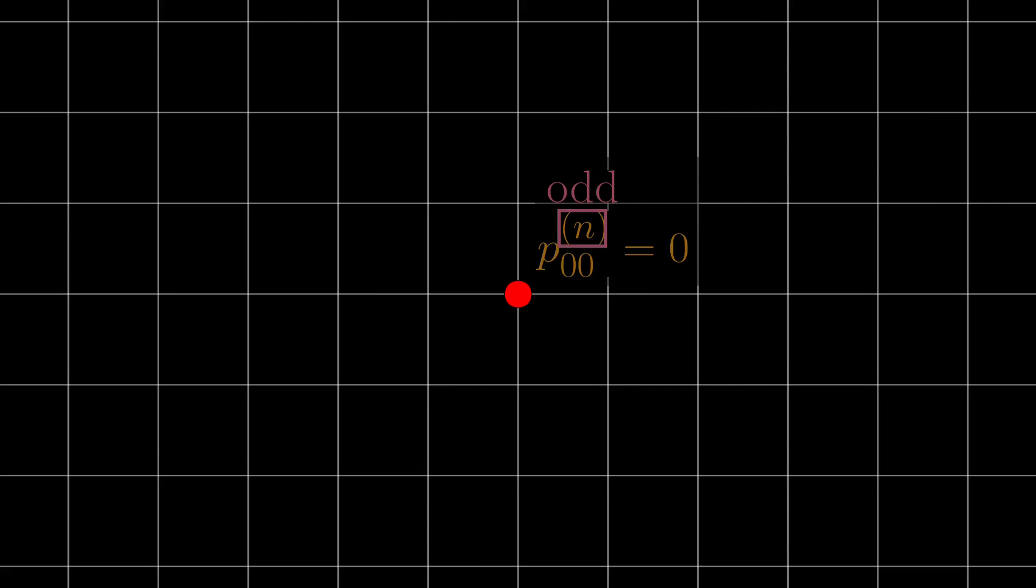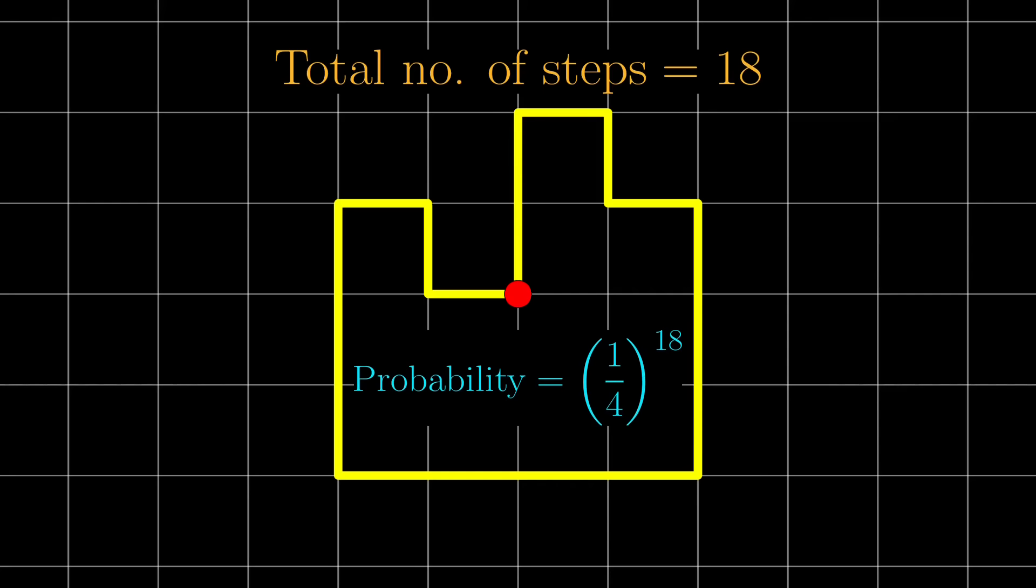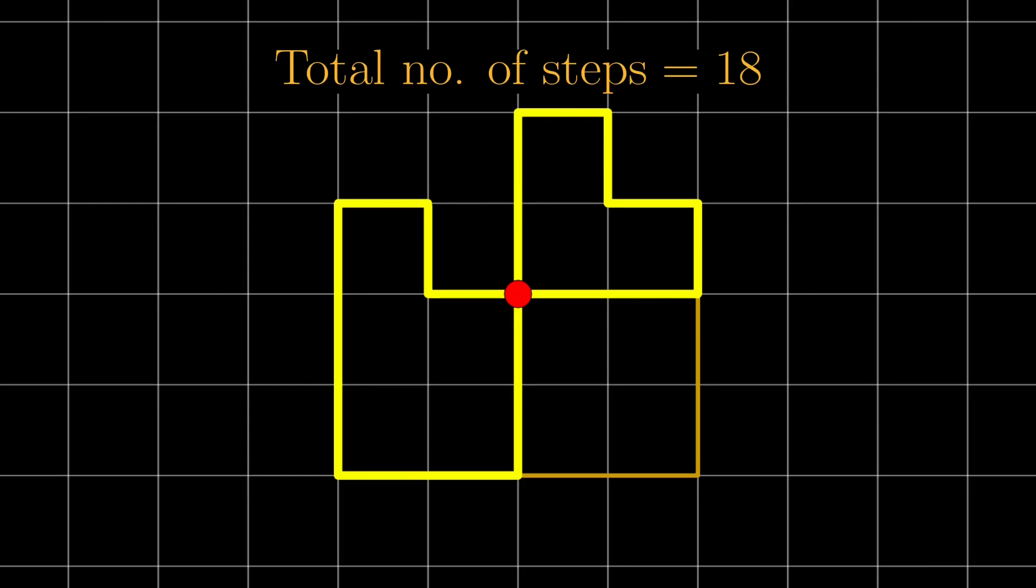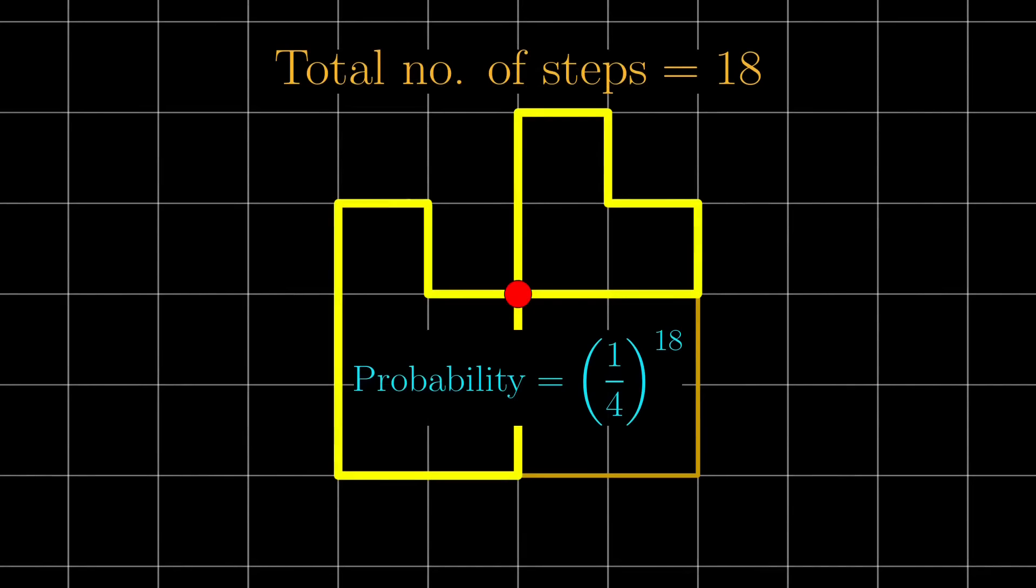And so we can just focus on finding the even 2nth step probabilities. Let's say we want a total of 18 steps, then this is a specific possible return path. This specific path has a probability of 1 quarter to the 18, because each step is chosen with probability 1 quarter, and there are 18 steps you need to tick. Of course, this is not the only possible path that returns to the origin after 18 steps. This one also does. Even though it has returned to the origin already, as long as you return at step 18, it still counts.